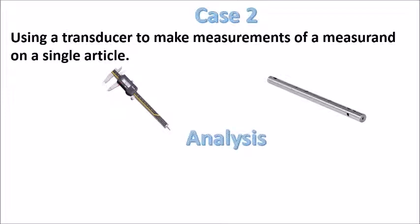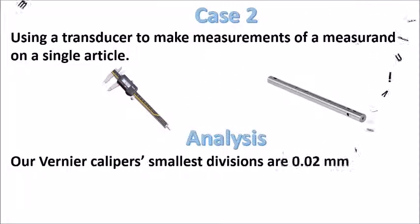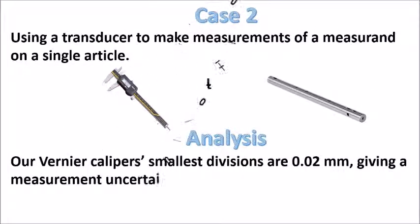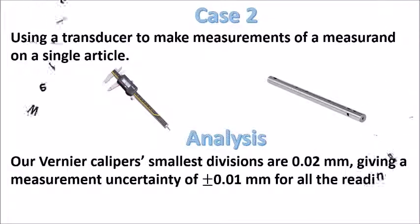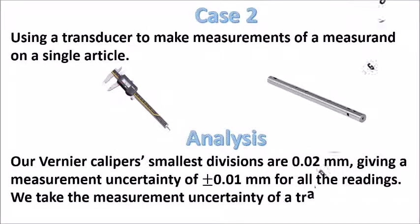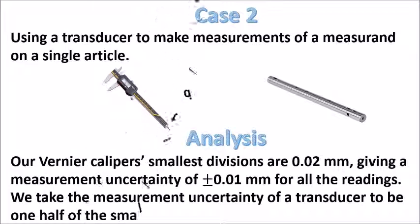In this case, we use the resolution of the caliper to estimate the error. Our Vernier caliper's smallest divisions are 0.02 mm, giving a measurement uncertainty of plus minus 0.01 mm for all the readings.